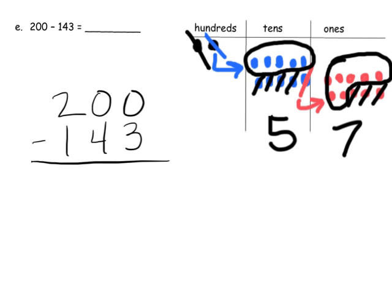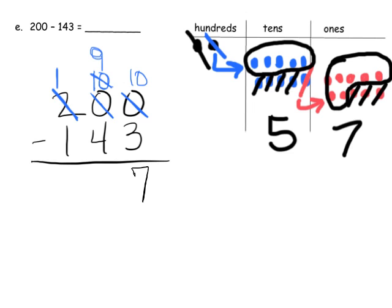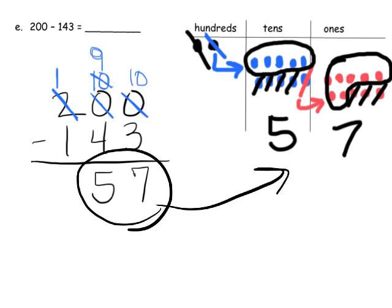Now let's show that using the standard algorithm. It says take away 3 ones, but we don't have any ones and we don't have enough tens. So we're going to have to go all the way over to the 100s column. We unbundle 1 hundred, leaving us with 1 hundred, and that gives us 10 tens. Then we unbundle 1 ten, leaving us with 9 tens, and that gives us 10 ones. 10 ones take away 3 ones gives us 7 ones. 9 tens take away 4 tens gives us 5 tens. Then 1 hundred take away 1 hundred leaves us with 0 hundreds — we don't need that zero. So the answer is 57, and that's what we knew all along.